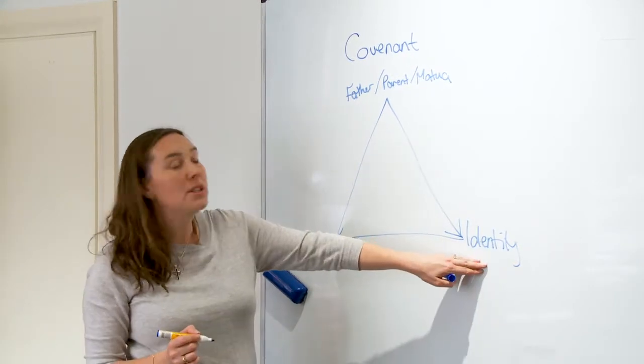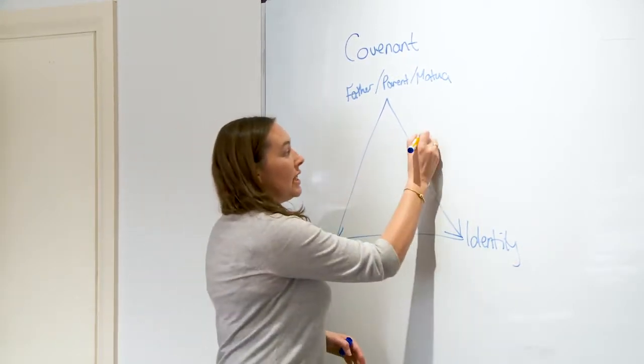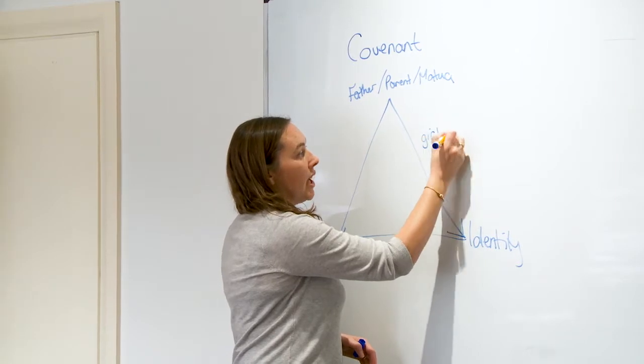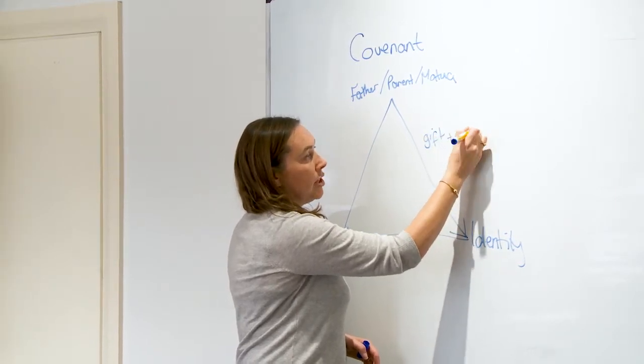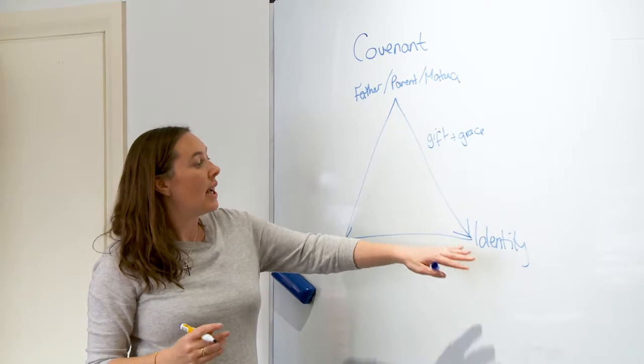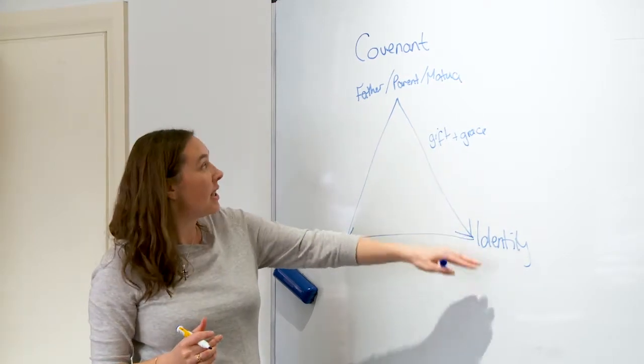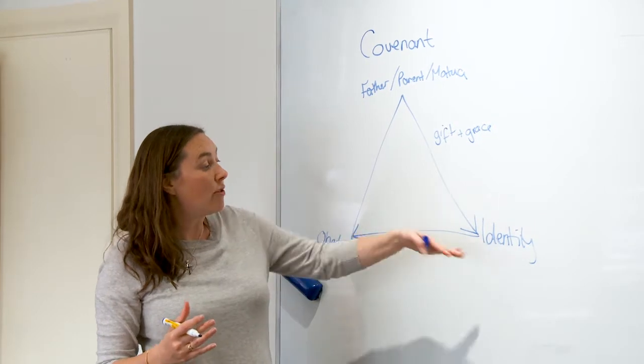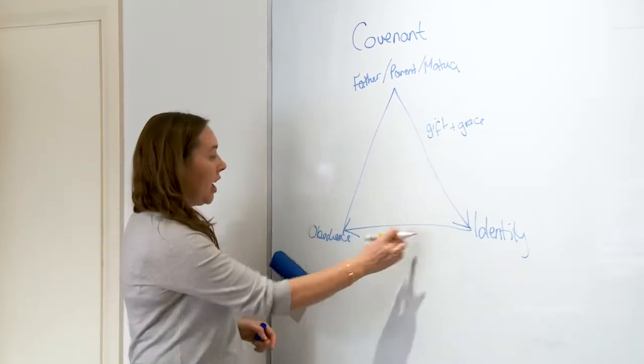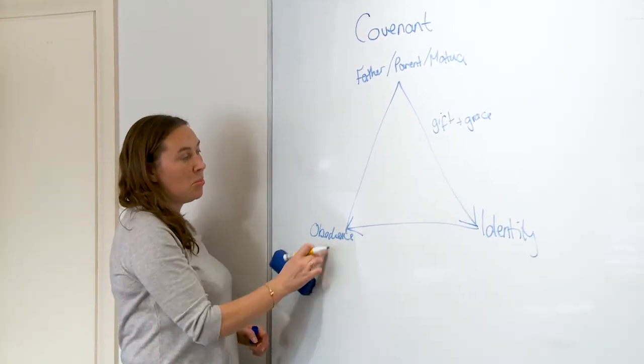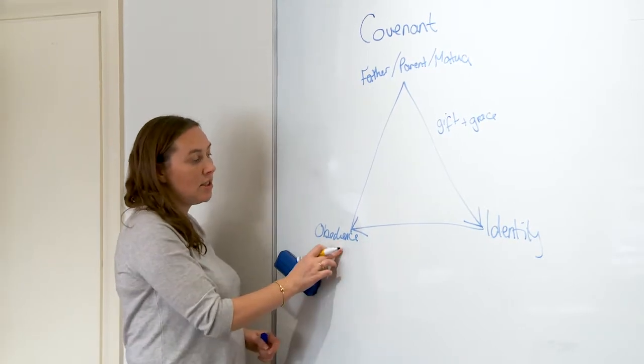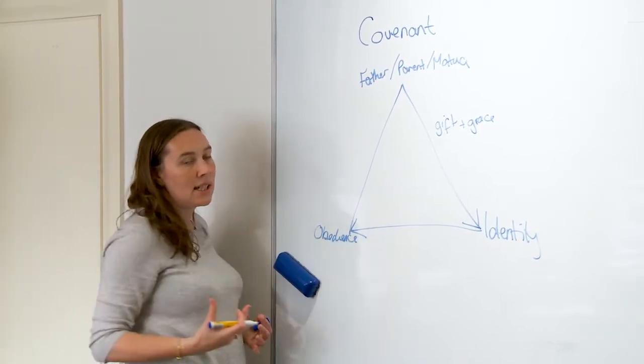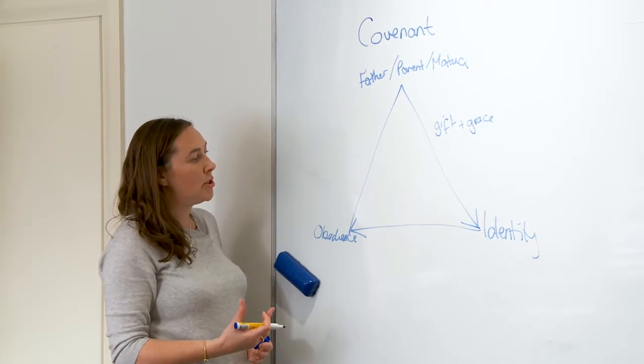We are children of God by complete gift and grace. Nothing we have done enables that relationship—that is a gift from God. Our identity is children of God. Out of the overflow of that identity, we have a heart's desire to be obedient, to listen to the voice of God and to act out of that knowledge of God speaking to us.